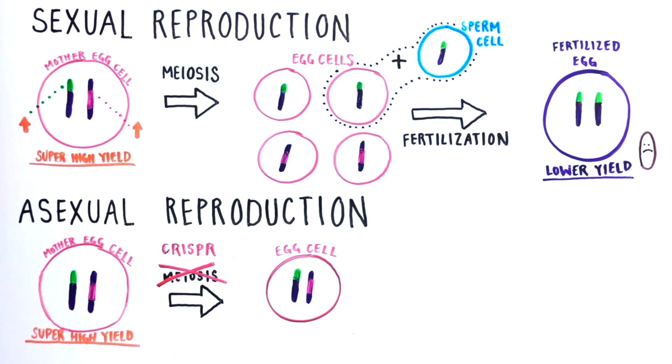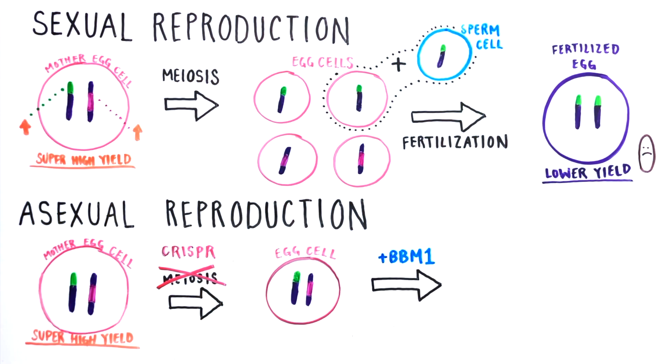Next, the researchers added a gene called Baby Boom 1, or BBM1, which triggers the egg cell to develop into an embryo without the need for sperm, eventually producing a full seed.